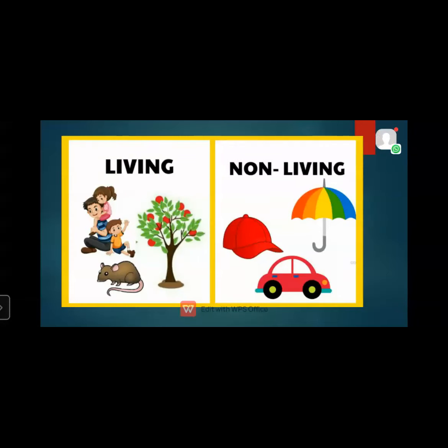Before starting, let us revise the difference between living organisms and non-living organisms. Living things can breed, grow, reproduce, see, and move. Non-living things cannot see, hear, move, grow, or reproduce. The processes conducted inside a living organism's body are called life processes.